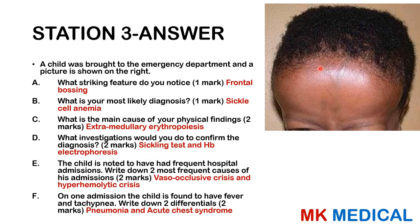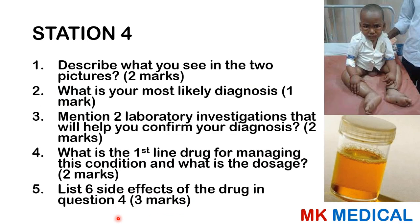As you can see, this child has frontal bossing, which is consistent with sickle cell anemia. The frontal bossing is due to extramedullary erythropoiesis occurring in these bones. You can confirm with a sickling test and hemoglobin electrophoresis. The most frequent reasons for admission include vaso-occlusive crisis and hyper-hemolytic crisis. A child admitted with fever and tachypnea or respiratory symptoms should be assessed for either acute chest syndrome or pneumonia.